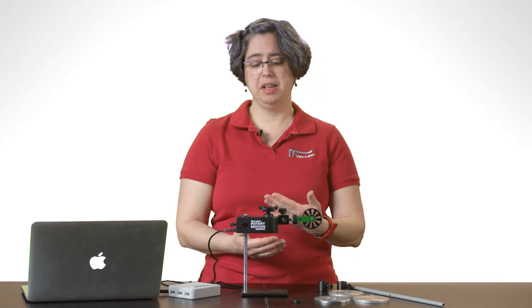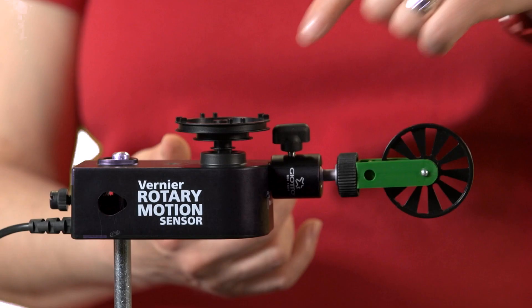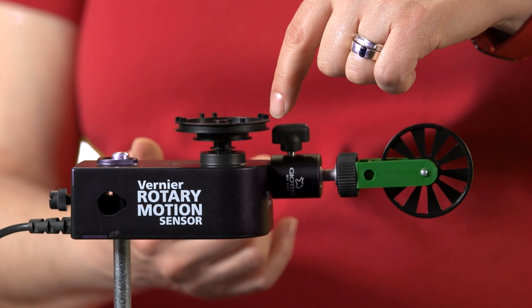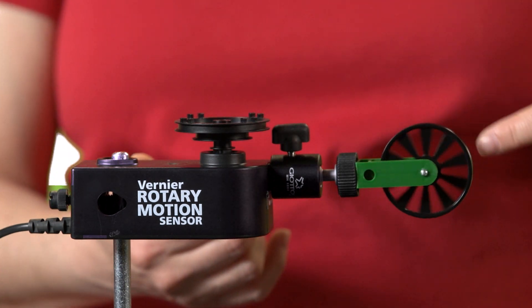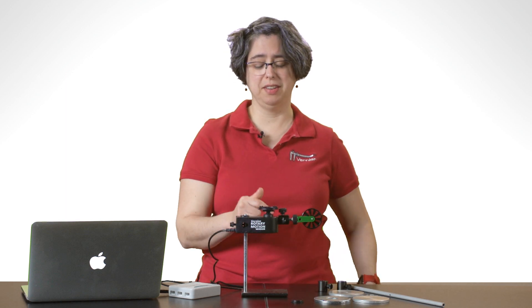And what I'd like to do is have a string with a mass hanging off of it that's wrapped around the Rotary Motion Sensor, and then goes over this pulley so that that mass can provide a torque for turning the sensor.